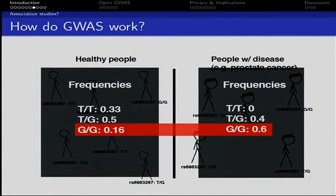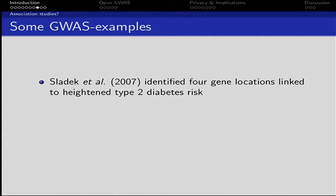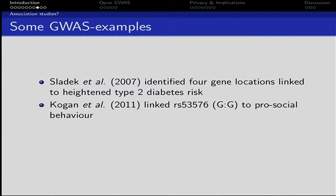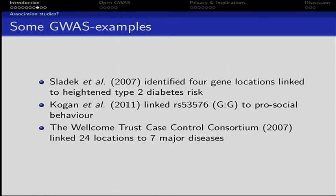Some real-life examples: Slatic et al. identified four variants which link to heightened risk to develop diabetes type 2. There's a slightly controversial study by Kogan et al. which linked one SNP to pro-social behavior. And a big, good study is from the Wellcome Trust, which linked 24 of these SNPs to seven major diseases.